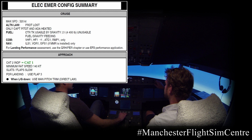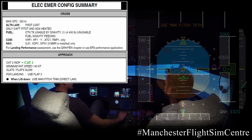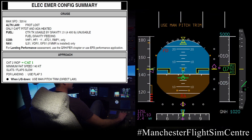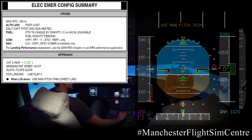We have a minimum RAT speed of 140 knots — below that, the RAT will stall. We need to consider the configuration timing on the approach, as the slats and flaps are slow. For landing, we're going to use flap 3. And very importantly, when the landing gear goes down, the flight controls will revert to direct law and we need to use manual pitch trim.